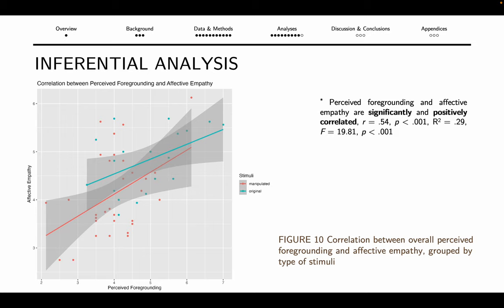When perceived foregrounding is greater, affective empathy also tends to be greater, especially for readers of the original texts, which confirms my initial hypothesis. Furthermore, the regression analysis shows that perceived foregrounding is able to predict at least part of the variance in affective empathy.